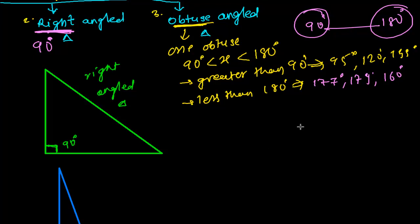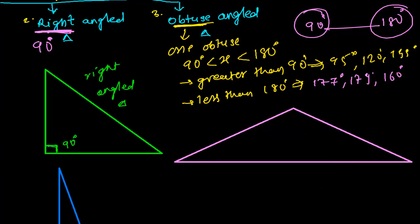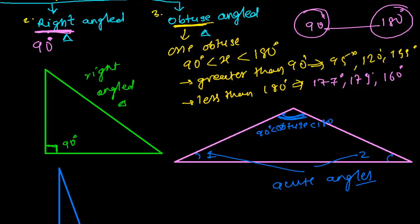For example, an obtuse angle triangle looks something like this. Here, if you look, both this angle and this angle are acute angles, and this angle is the obtuse angle — greater than 90 degrees but less than 180 degrees. A triangle containing one obtuse angle is known as the obtuse angle triangle. In an obtuse angle triangle there is one obtuse angle and two acute angles.